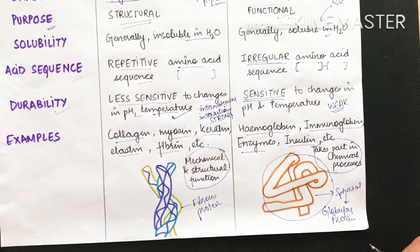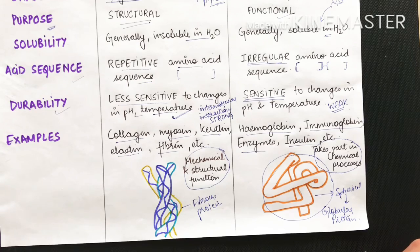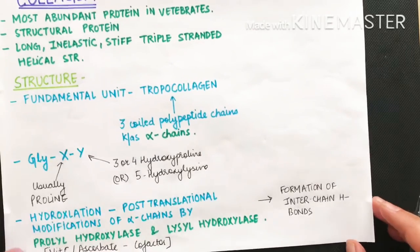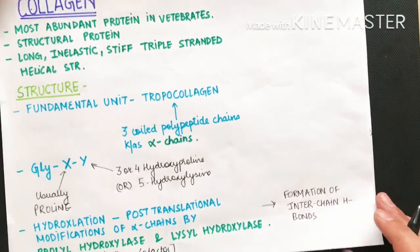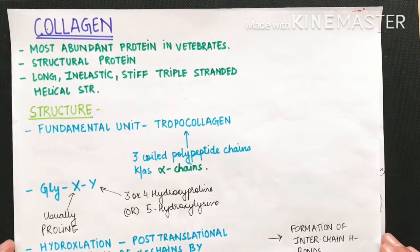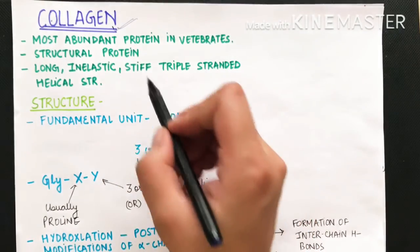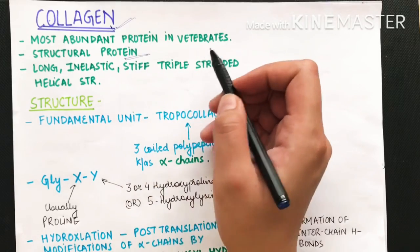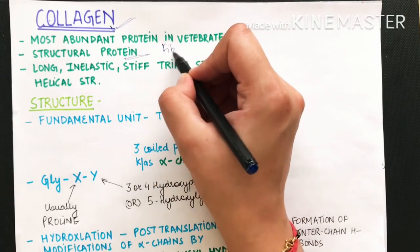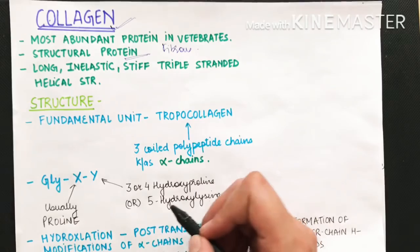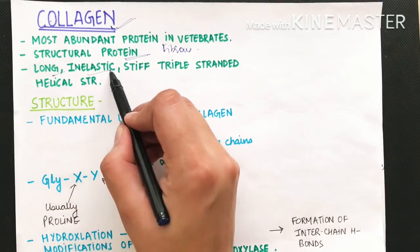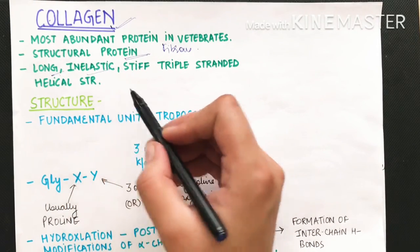We will start with collagen. Collagen is the most abundant protein found in vertebrates. It is a structural protein and it is fibrous. It is long and inelastic, meaning it cannot be stretched — it has no stretchability along its length.